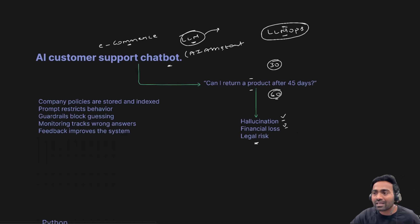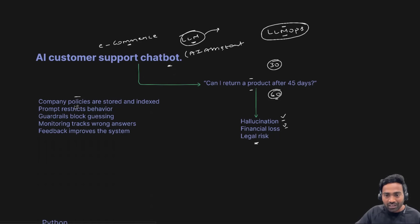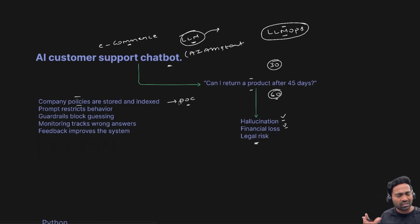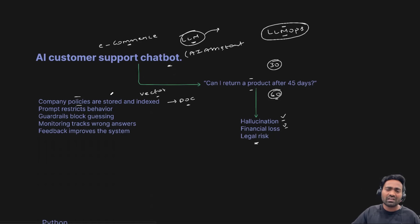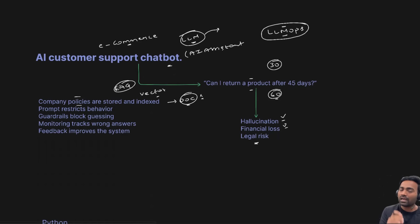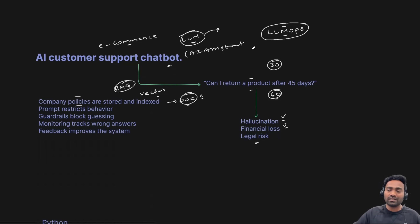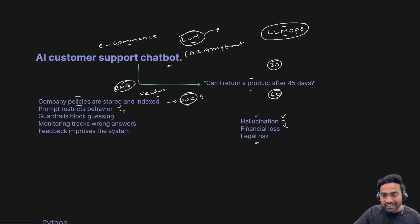What you need is LLMOps. So basically you take a large language model and provide it with company policies — it can be a document, a PDF, or a large amount of information. You store them in a vector database. You can even train or fine-tune the large language model on the document, but this is not a recommended approach. Instead, you would go with RAG. Just understand that the document is stored and indexed by the large language model.